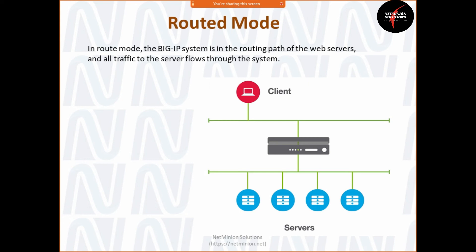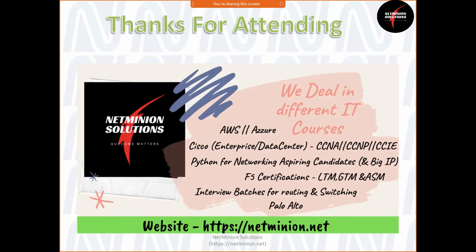F5 can use the same port for inbound and outbound traffic — that is one-arm mode. If you have different ports available, it is two-arm mode. There are also port channel configurations we will discuss in subsequent classes.